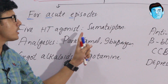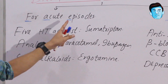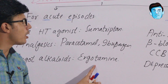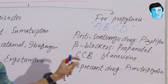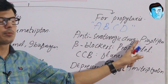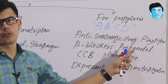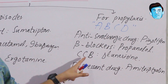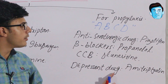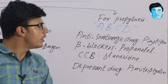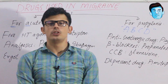For acute migraine: F stands for 5-hydroxytryptamine agonist (sumatriptan); A stands for analgesics containing paracetamol plus ibuprofen; E stands for ergot alkaloids (ergotamine). For prophylaxis, the mnemonic is A, B, C, D — A for anti-serotonergic drugs including pizotifen; B for beta blockers, specifically propranolol; C for calcium channel blockers including flunarizine; D for antidepressants, specifically amitriptyline. That is all about the anti-migraine drugs.